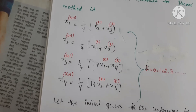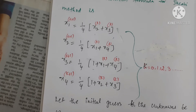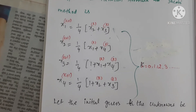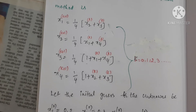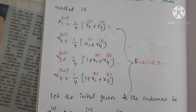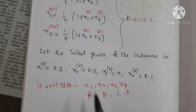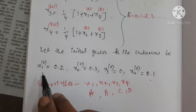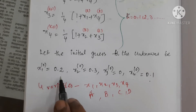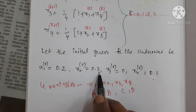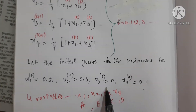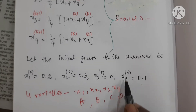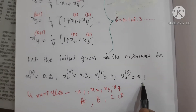Before going to get a sequence of approximations, we need to take an initial guess for all the four unknowns. Let the initial guess be x1⁰ = 0.2, x2⁰ = 0.3, x3⁰ = 0, and x4⁰ = 0.1.